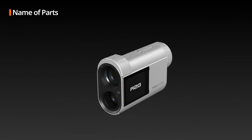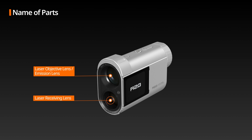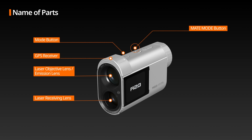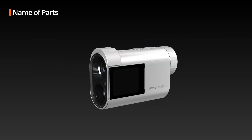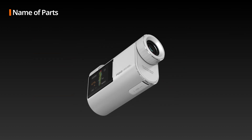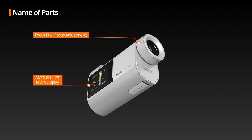Name of each part: Laser Objective Lens, Emission Lens, Laser Receiving Lens, GPS Receiver, Mode Button, Matte Mode Button, Power Measurement Button. It also consists of a Focus Dial, AMOLED 1.78-inch touch display, an eyepiece lens, and a USB charging port.